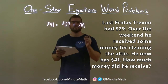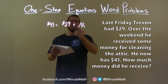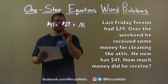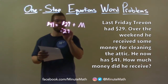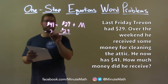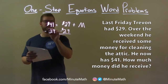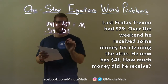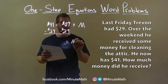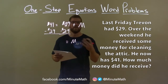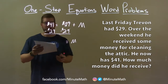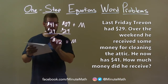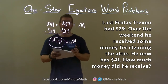Now I want to see how much he received over the weekend. We're adding $29, so the opposite of addition is subtraction. Subtract $29 from both sides. That leaves M by itself — the money he made over the weekend. $41 minus $29 is $12, so he made $12 over the weekend.